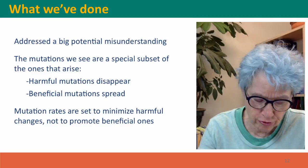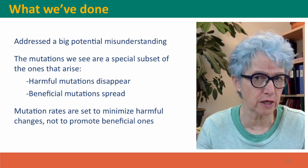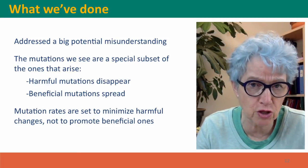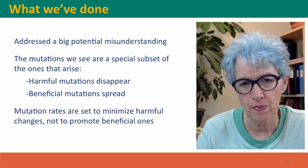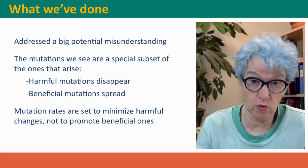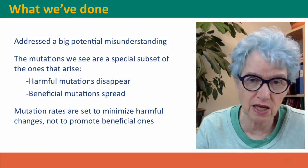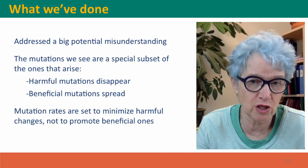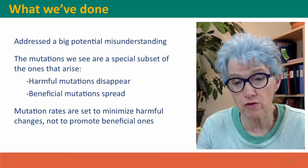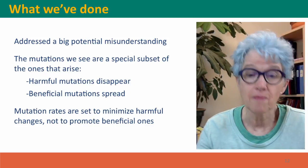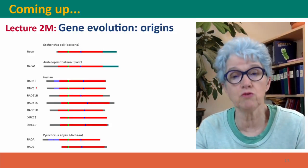So, we've addressed a big potential misunderstanding: the idea that environmental effects can cause particular mutations to happen — they can't. This will also be important when we think about cancer, because there's a sense that it might be your fault that a mutation happened, but in fact we have no control over which mutations happen. The mutations we see are a biased subset — containing beneficial and neutral mutations — because harmful mutations are eliminated by natural selection. Finally, mutation rates are set by natural selection to minimize harmful changes, balancing that with the costs of preventing mutations, not to promote beneficial ones. Coming up next, we're going to think about the mutational events that create new genes. I hope to see you there.